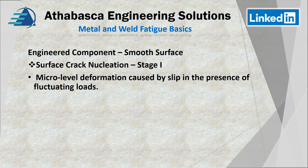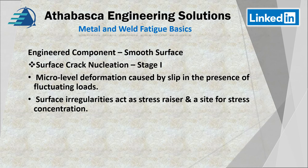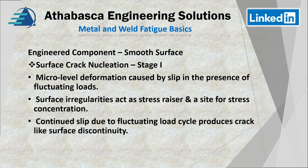At a micro level, we have micro-level deformation, which is part of fracture mechanics. There's a term called slip, which refers to how a defect travels through crystalline material. Nucleation occurs because the slips build up in the presence of fluctuating loads. The fluctuating loads have to be high enough for this slip to occur, but it does occur and it nucleates at the weakest point. So if the surface of that component isn't perfectly smooth and it has some stress risers — a site for stress concentration — then you're going to have some issues. If we continue the slip with load fluctuation, we can produce a crack-like surface discontinuity, and that's when our nucleation begins.